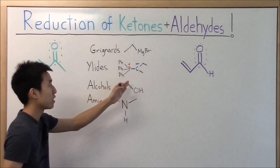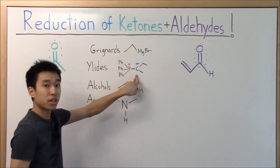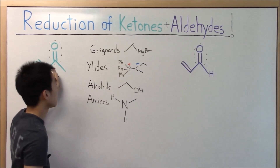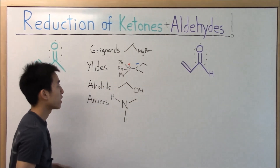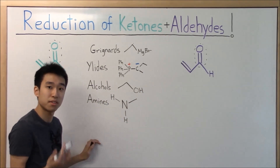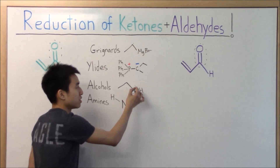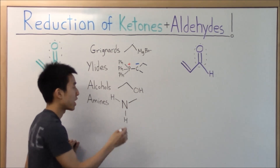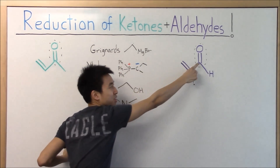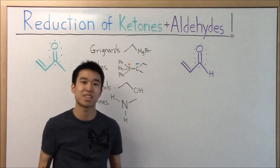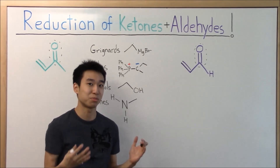Phosphonium ylids work in the Wittig reaction — the nucleophilic carbon can target those electron-deficient carbonyl positions and create alkenes. Alcohols, and more specifically the oxygen, act as the nucleophile in those reactions. They can attack at those two positions and create hemiacetals, acetals, and even cyclic acetals, which are pretty cool protecting groups.